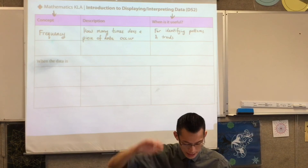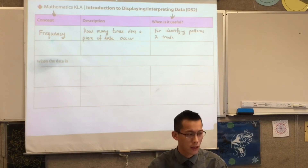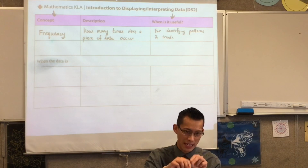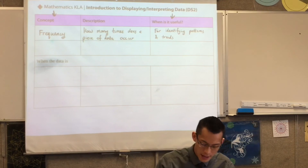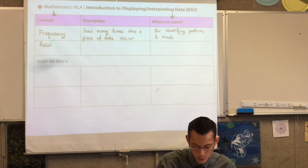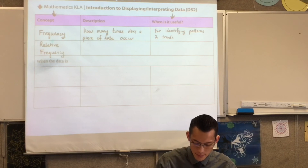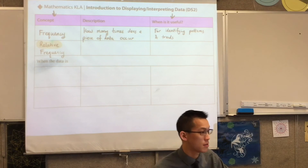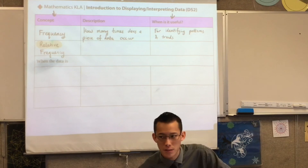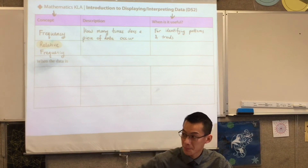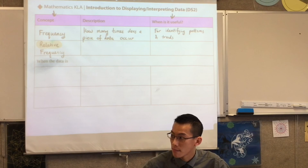Underneath the three rows that are remaining, we've got three different kinds of frequency, which tease out this idea a little more. The first one is what we call relative frequency. Based on the name, I wonder how many of you could give me a suggestion as to what you think it means. What do you reckon, Akil? — 'How often something occurs in relation to something else.'